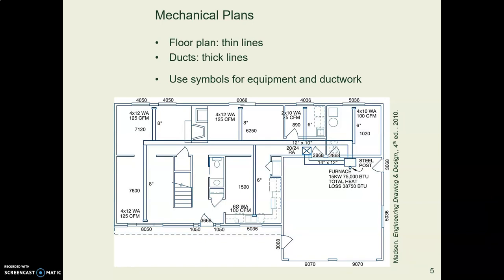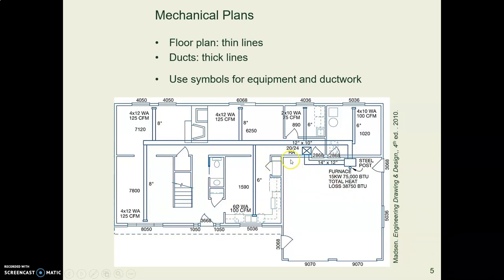If you're doing a separate plan for your mechanical system, you want to communicate to the contractor information about this mechanical plan. They don't need to know all about the walls — you already built the walls. You're trying to tell them about the ductwork, registers, plenum, and all that. So in order to communicate clearly in a separate mechanical plan, you'll make the wall lines thin and the ductwork lines thick. In this example, he has made the walls thin and the ductwork thick, so they do pop out a little bit better.